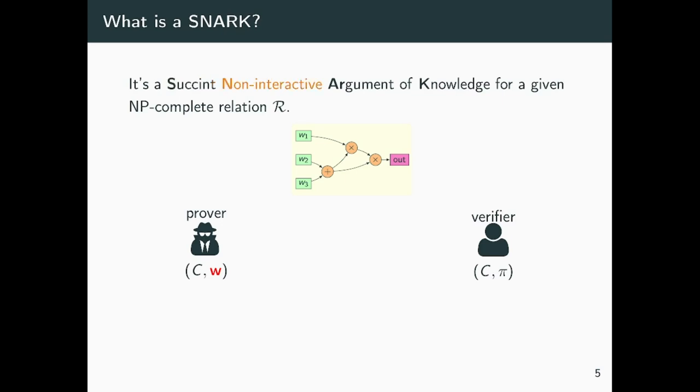It should be non-interactive, meaning that there is no further interaction between verifier and prover after the prover sends its first message, which is essentially necessary for scalability in blockchain. And we want it to be an argument of knowledge, meaning that if the verifier accepts the proof, then this means that the prover essentially knows a witness for the circuit.